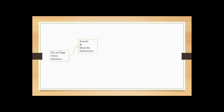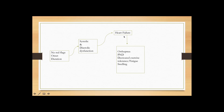Moving on to heart failure: patients with heart failure usually just have a duration of symptoms — a few days or a few weeks depending on how bad the heart failure is — but they don't usually have chest pain. They come in mainly with shortness of breath. If you're suspecting heart failure, the high-yield questions to ask are about dyspnea, orthopnea, and PND — the classic DOP triad for left ventricular failure.